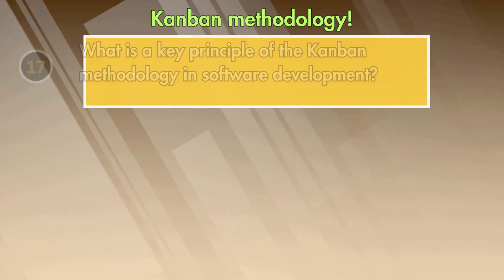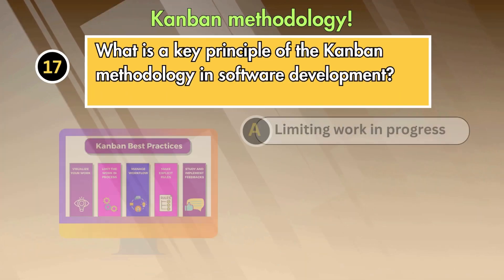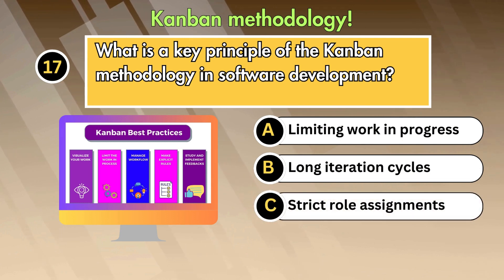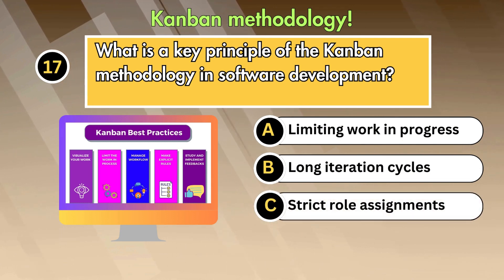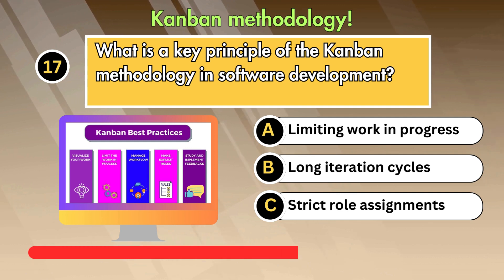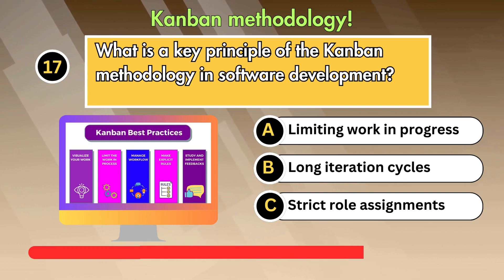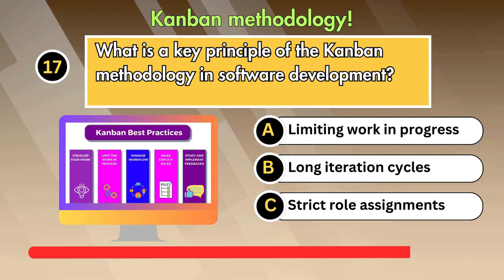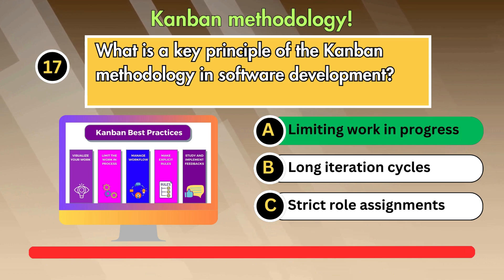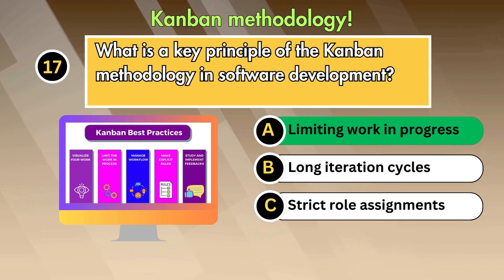Question 17: What is a key principle of the Kanban methodology in software development? Option 1: Limiting work in progress. Option 2: Long iteration cycles. Option 3: Strict role assignments. Answer is: Limiting work in progress.